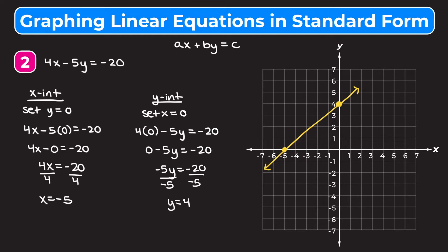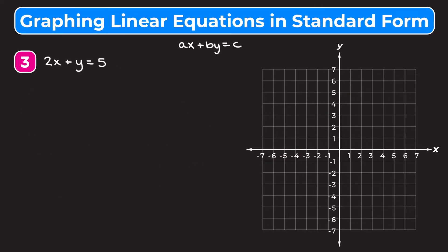Now we'll go through two examples where we change standard form into y equals mx plus b form. For this example we have 2x plus y is equal to 5. What we want to do is change this into y equals mx plus b form and then graph it using that form.